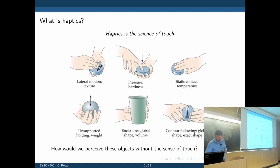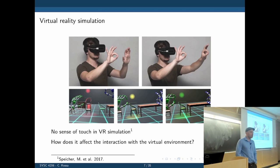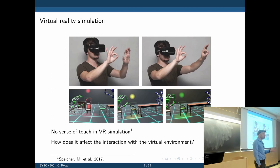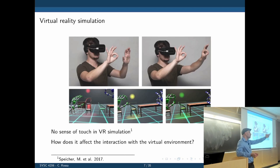Let's start with an application in a virtual environment. You've probably played with virtual reality before — it's quite fun. You manipulate objects and do everything, but you don't feel any objects at all. You can tell that by not feeling anything, your accuracy in doing a certain task is a bit random, because the only feedback you have is visual.